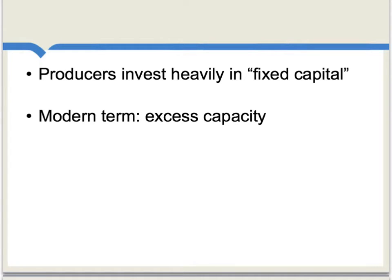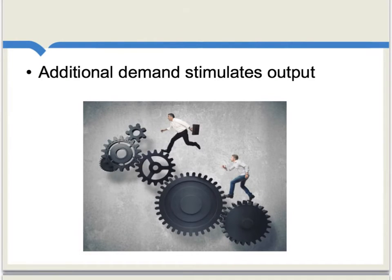Examples of fixed capital would be machinery and equipment. For Mill, the existence of this fixed capital means that at most points in time there exists what modern economists would call excess capacity. That is, there is idle capital sitting around, and if only there were more demand, producers would be happy to offer more of their goods and services to the market.